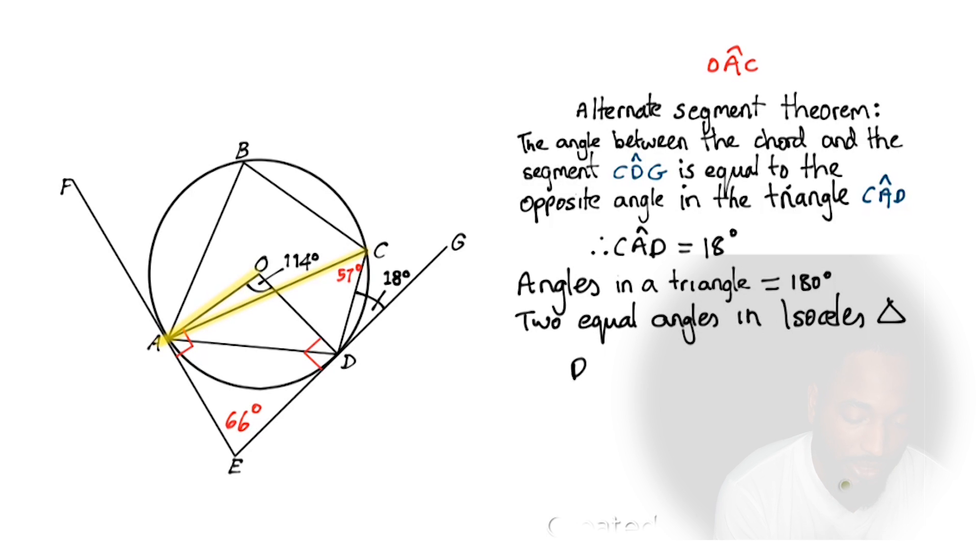Now to find the other angle, we'll use two concepts. The angles in a triangle are equal to 180 degrees and the two equal angles in an isosceles. So you should notice that this here is an isosceles triangle. This angle should be equal to this angle. And since we know one of the angles, we can find those two angles there. We could just find one. We already know this angle. Let's watch it unfold before our eyes.